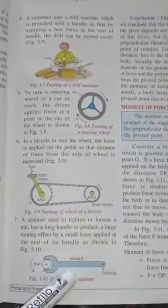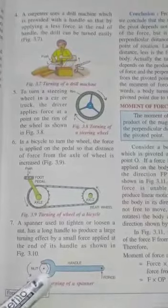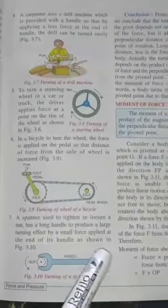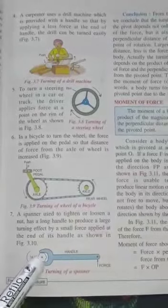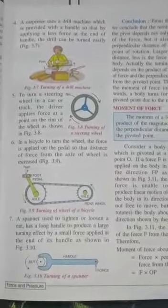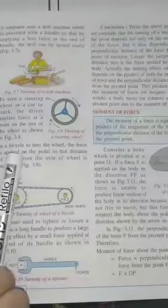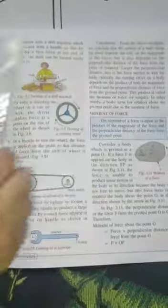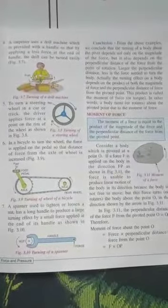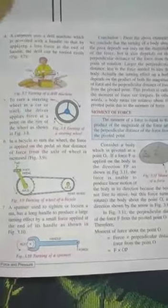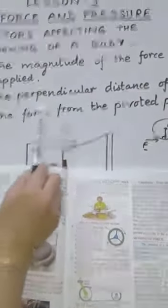Similarly, a spanner used to tighten and loosen a nut has a long handle so as to produce a large turning effect by applying a small force at the end of the handle — more the perpendicular distance, less force we have to apply to turn the spanner. From these examples, we conclude that the turning of a body about the pivot depends not only on the magnitude of the force but also on the perpendicular distance of the force from the axis of rotation. Larger the perpendicular distance, less is the force needed to turn the body. The turning effect depends on the product of both the magnitude of the force and the perpendicular distance from the pivot point.